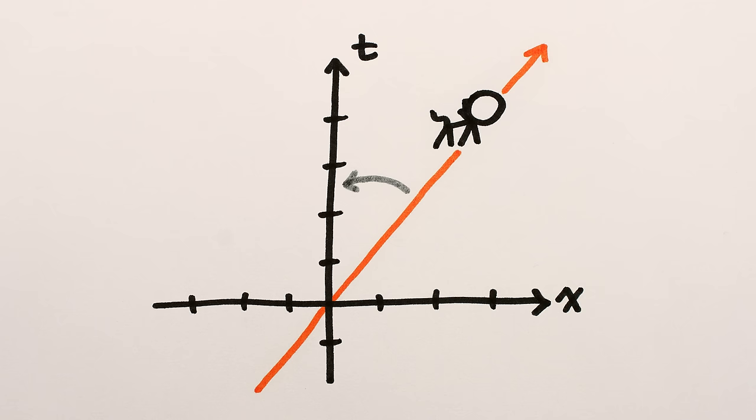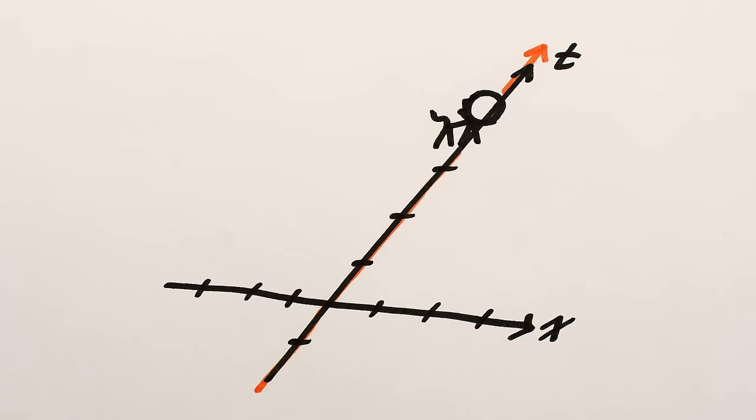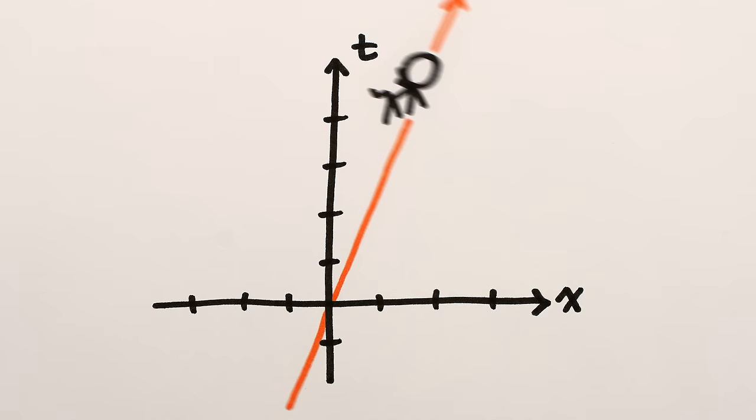That's not something we can do just by sliding the whole plot left or right or up or down, like we've done in the past for perspectives from different locations. No, changes of velocity require some sort of rotation-y thing to change the angle of the world line. And importantly, whatever this rotation-y thing does should be generalizable to a world line at pretty much any angle, since there was nothing special about the particular speed the cat happened to be going.